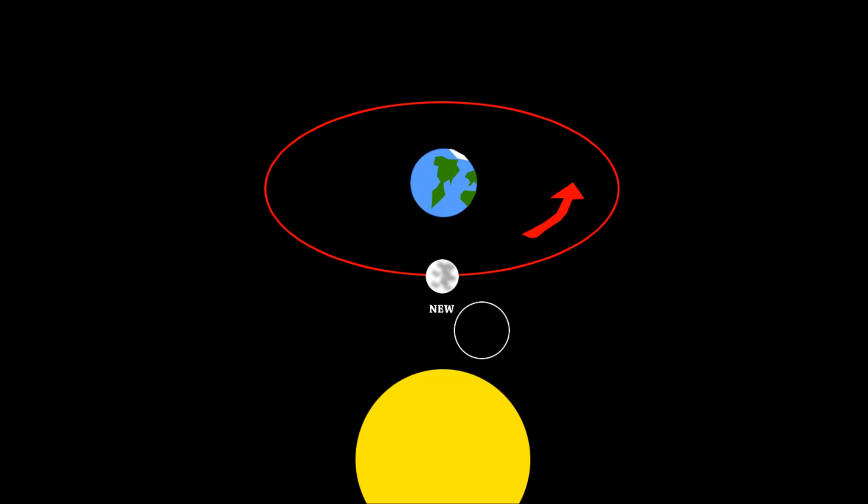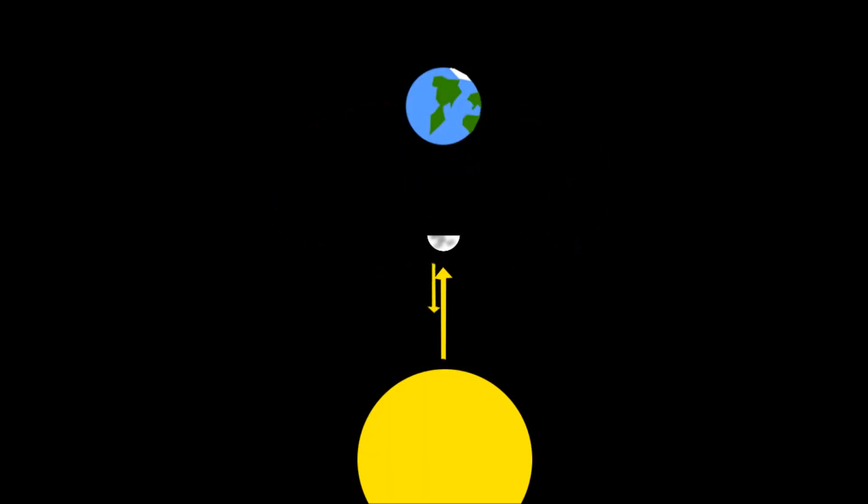Okay, first we see the new moon. This is when the moon is directly in between the Earth and the sun. For this reason, when the sun's light shines upon the moon, the light is reflected back towards the sun, away from the Earth. This is why we do not see a moon at all during the new moon phase.